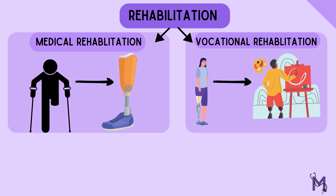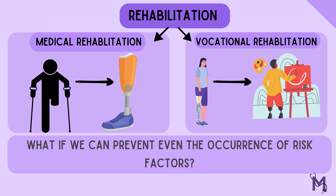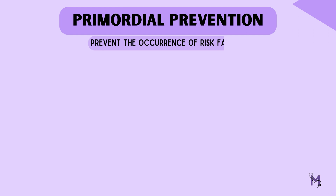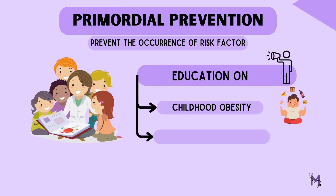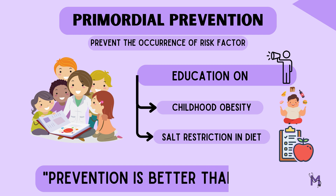Although there are three levels of prevention, there is also something called primordial prevention, where we educate the public to prevent the emergence of risk factors themselves — before risk factors even occur. This could include education regarding childhood obesity prevention or the benefits of salt restriction in the diet. So always remember, prevention is better than cure, and given any condition, there are methods of prevention which could stop the condition from getting worse.